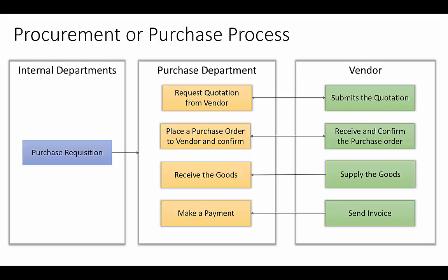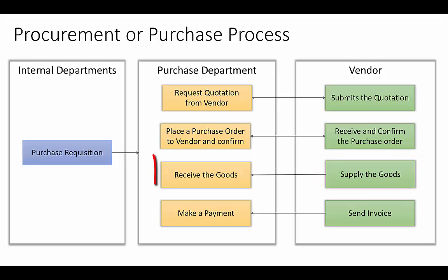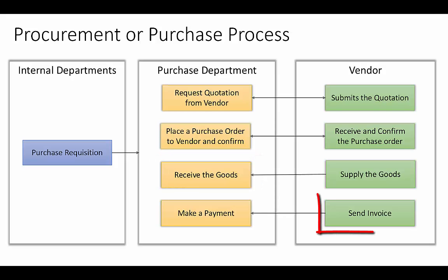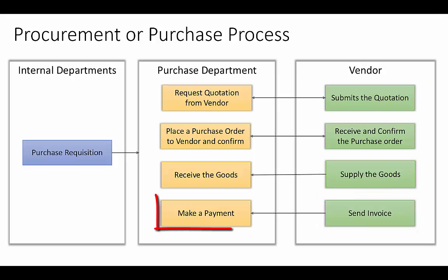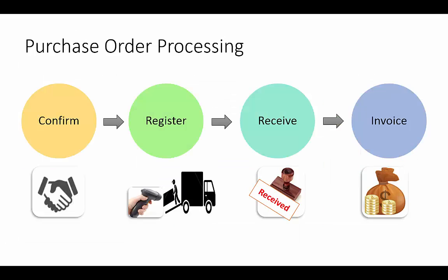The vendor will supply the goods as per the agreed delivery date. We need to receive the goods and acknowledge the same to the vendor. Once product delivery is confirmed, the vendor will send an invoice and we need to make a payment. Purchase order processing can be divided into four simple steps in Microsoft Dynamics AX 2012: Confirm, Register, Receive, and Invoice.